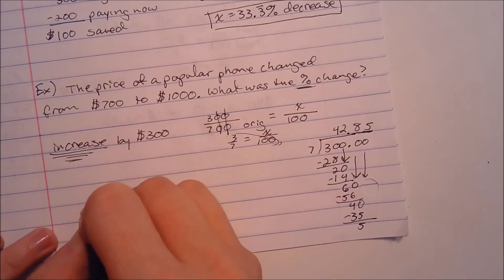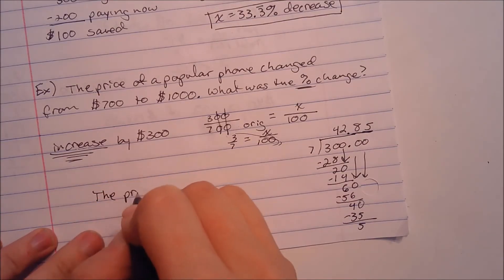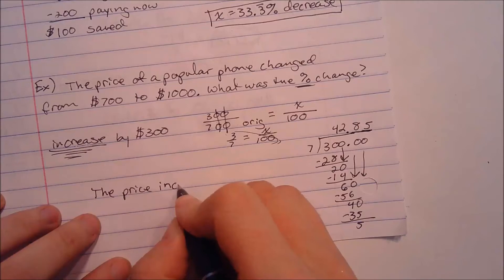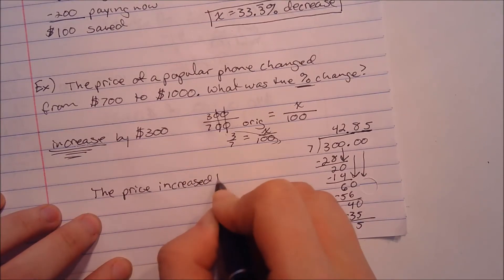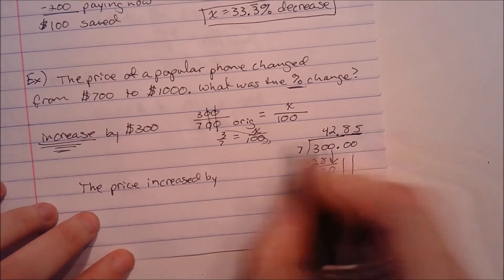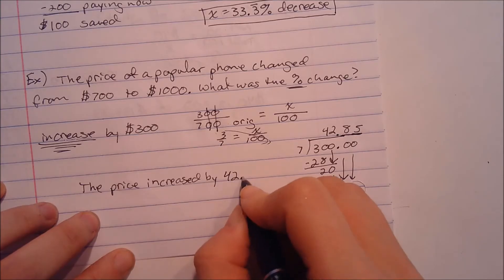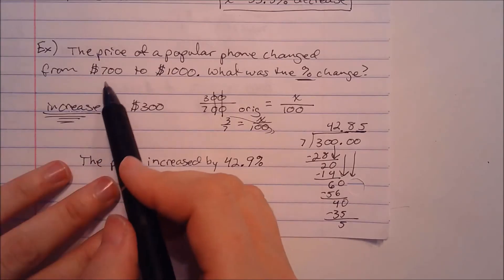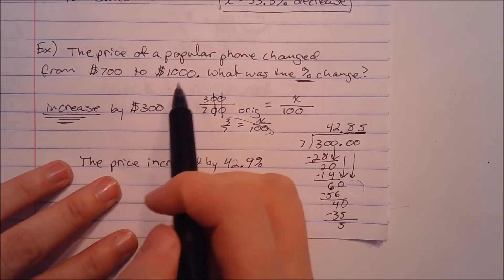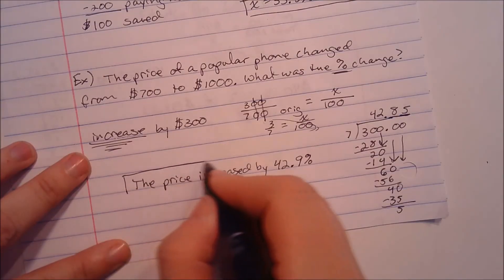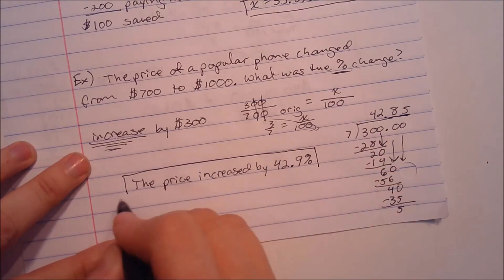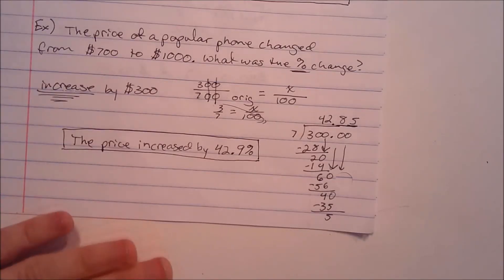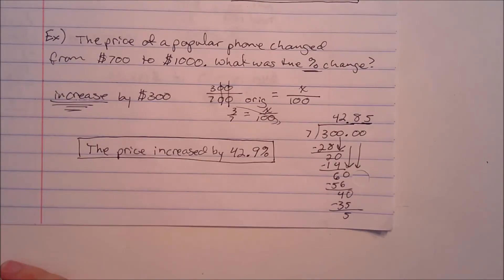The price increased by, let's make that 42.9%. Which, honestly, makes me think I was probably wrong about it only being $700 to begin with. Because that seems like a lot. That seems crazy. But, who knows? I'm not an iPhone person, so I didn't really keep track. In any case, that's how you find percent increase and decrease and percent of a number.